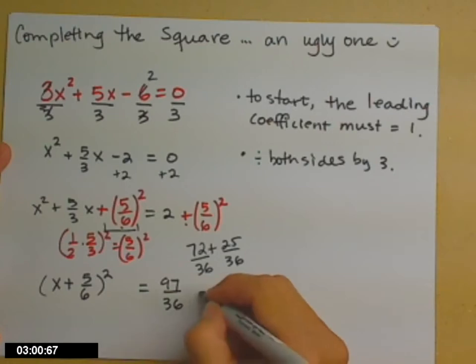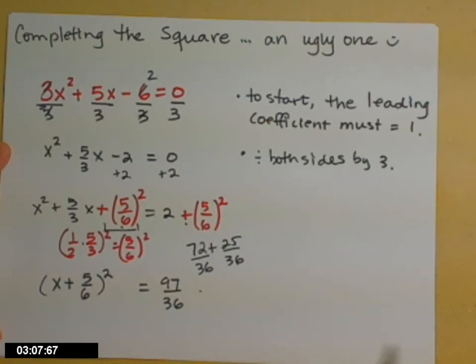So at this stage, I have that special form for extracting a root. Something squared equals a constant term. So go ahead and square root both sides.